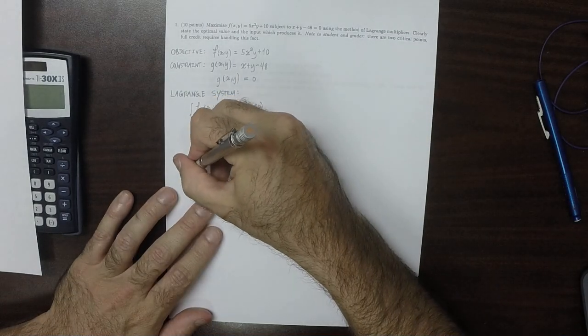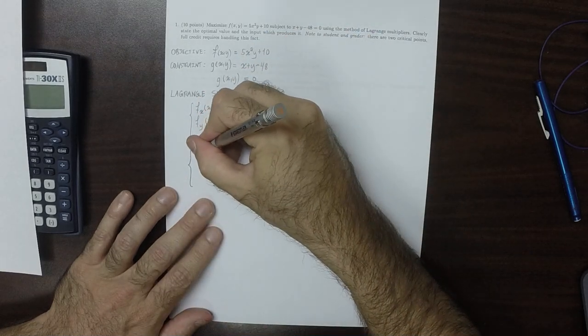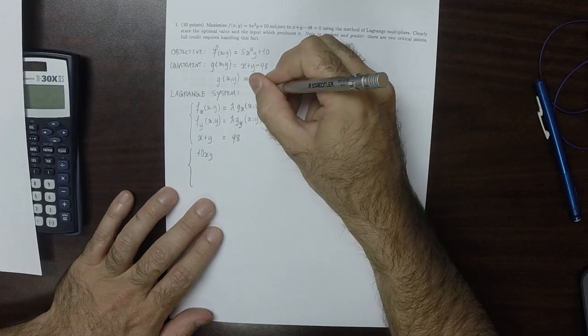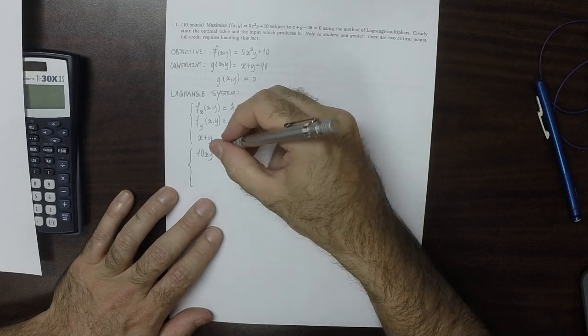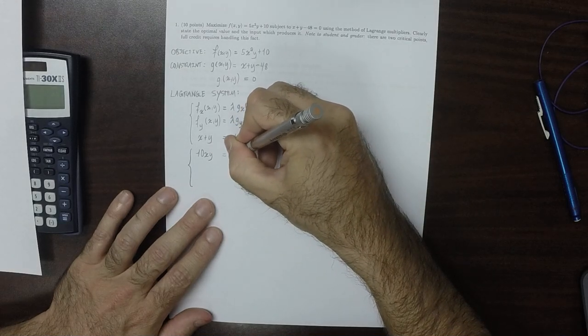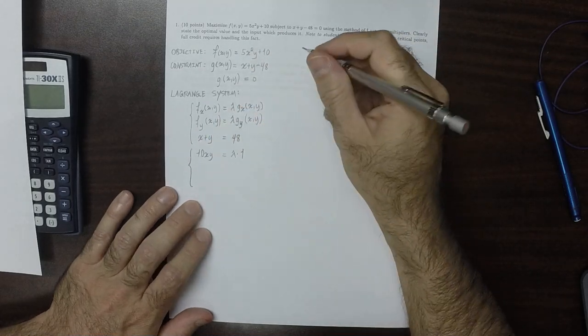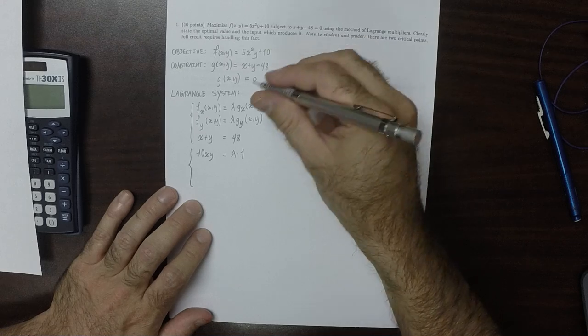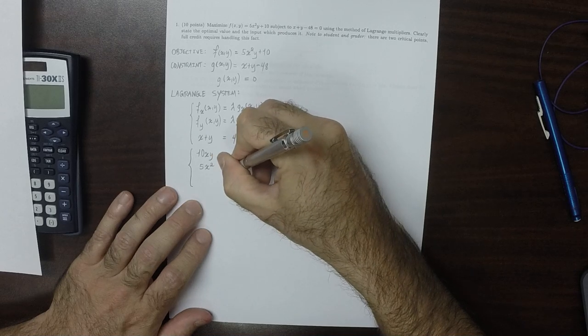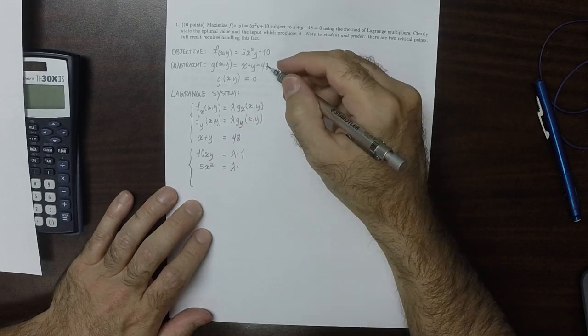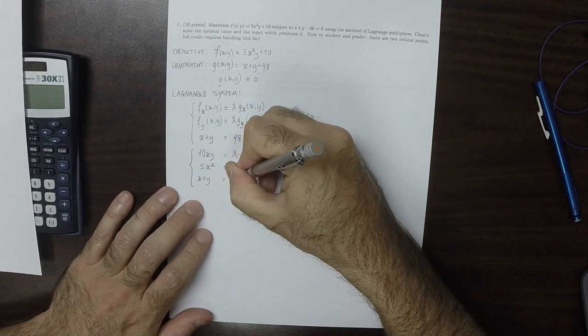Then writing all of that down, the x partial of the objective is 10xy, because the derivative of 10 is 0. So 10xy is lambda multiplied by the x partial of the constraint which is 1. The y partial of the objective is 5x squared, which is lambda multiplied by 1 again. And then x plus y is 48.